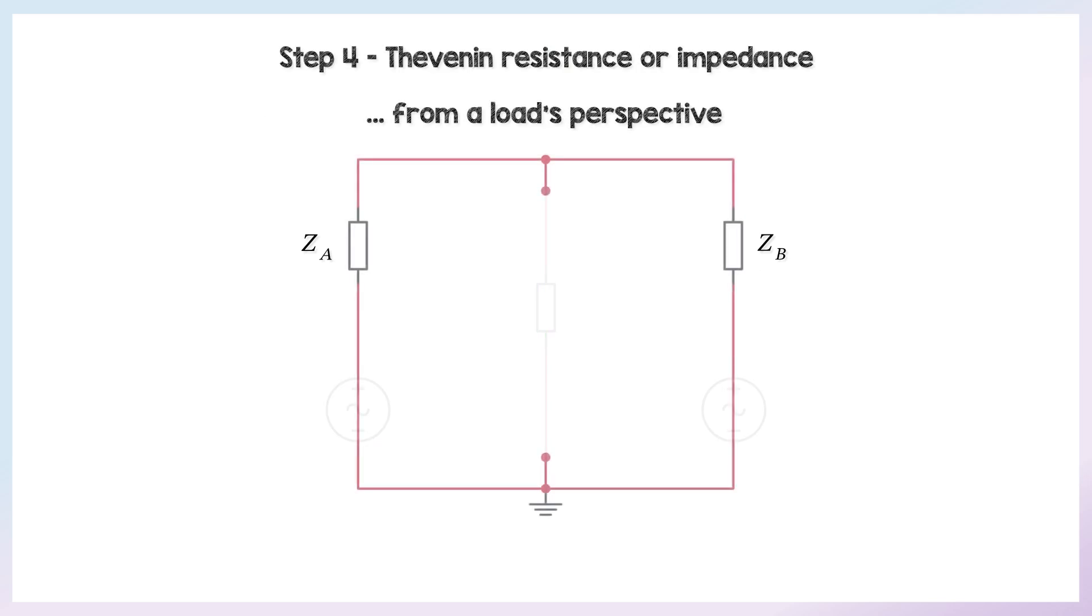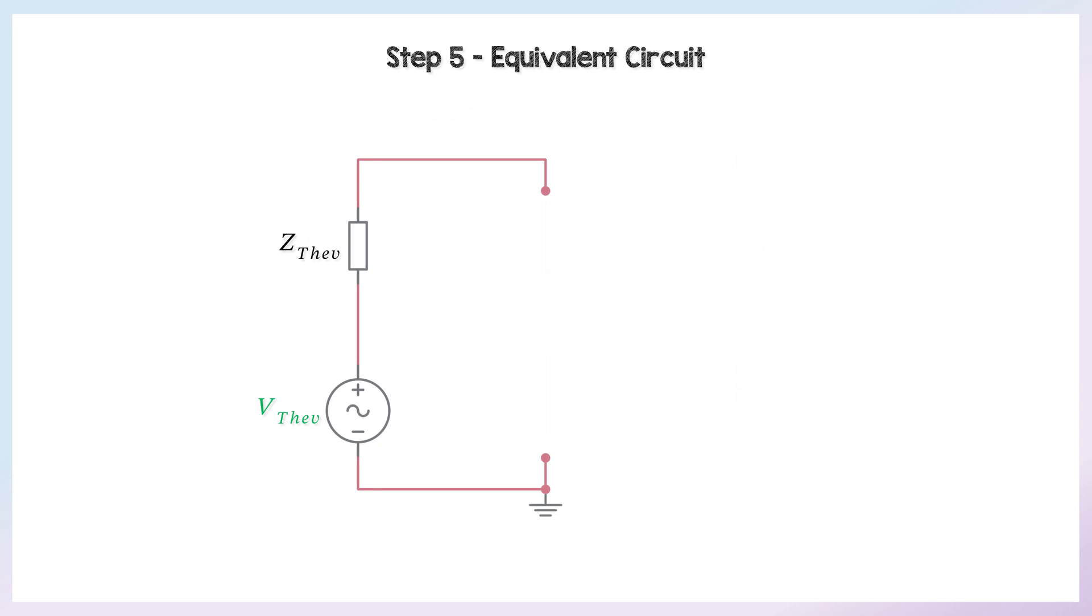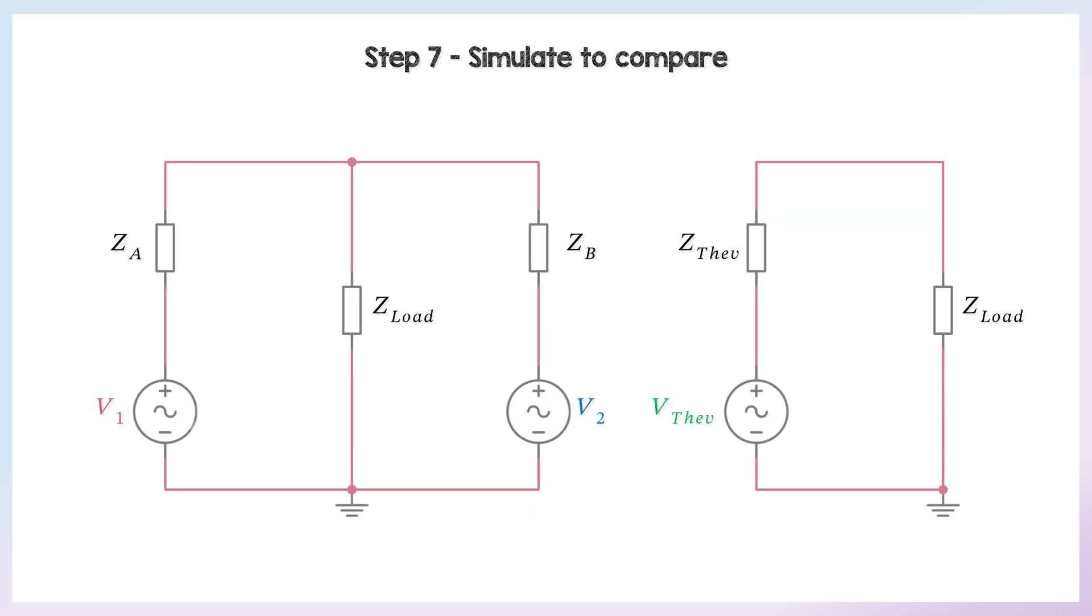Step four is to find a Thevenin resistance or impedance from a load's perspective, which would be in parallel here. And then step five, make the equivalent circuit and then replace the load. Step six, do all the calculations to check that they're equivalent, and they should be if you've done it right.